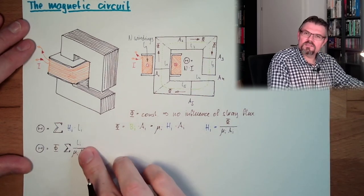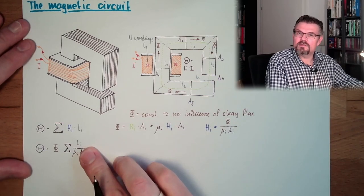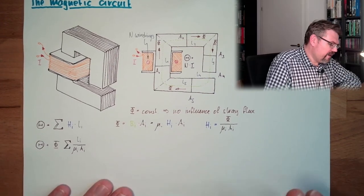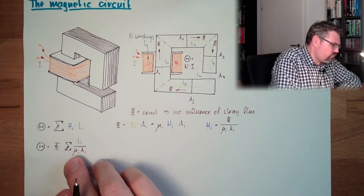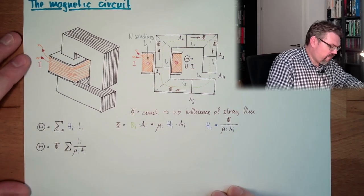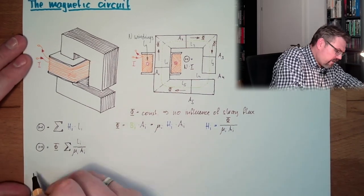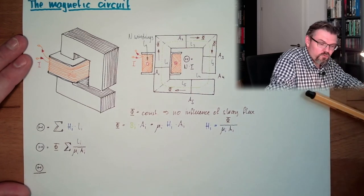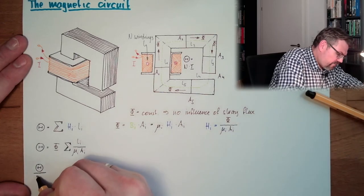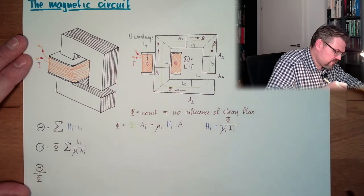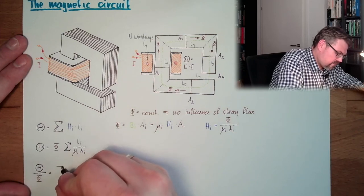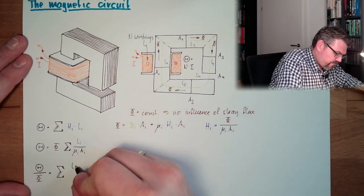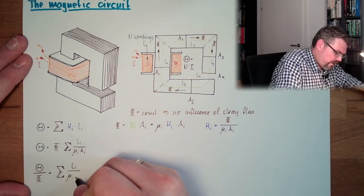Or, if I want to express it in another way, then we can say magnetomotive force or durchflutung divided by phi equals the sum of Li divided by mu i, Ai. This thing here.